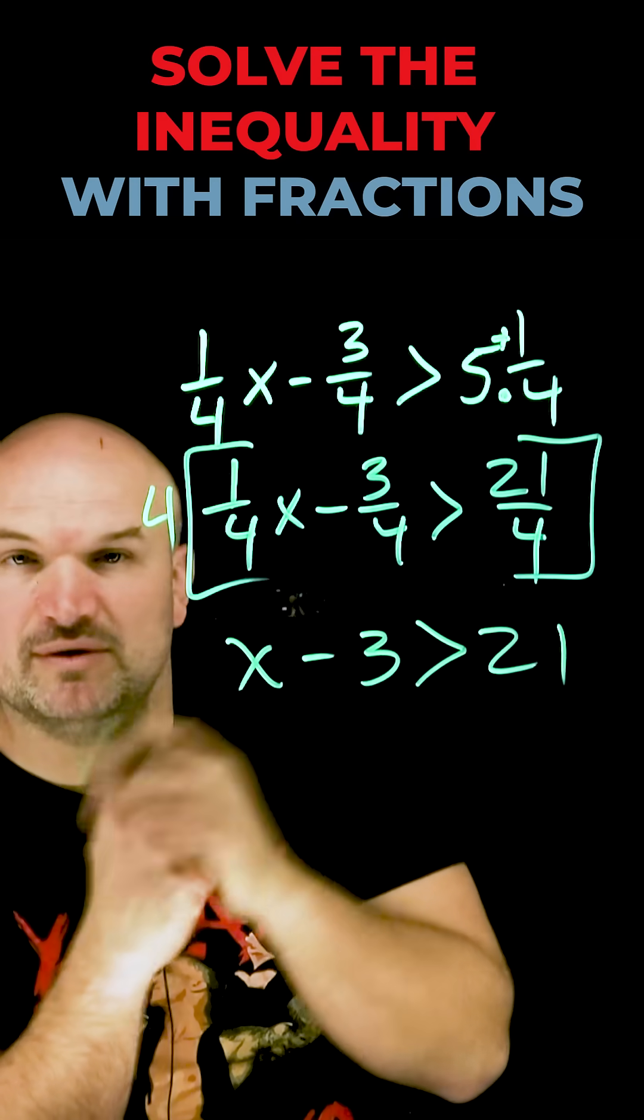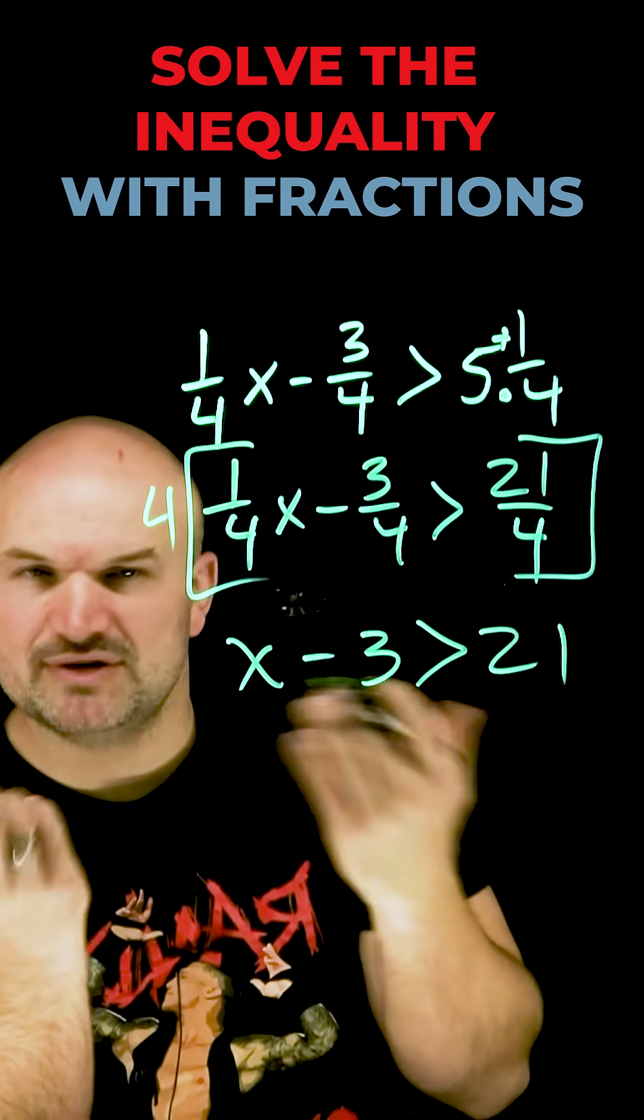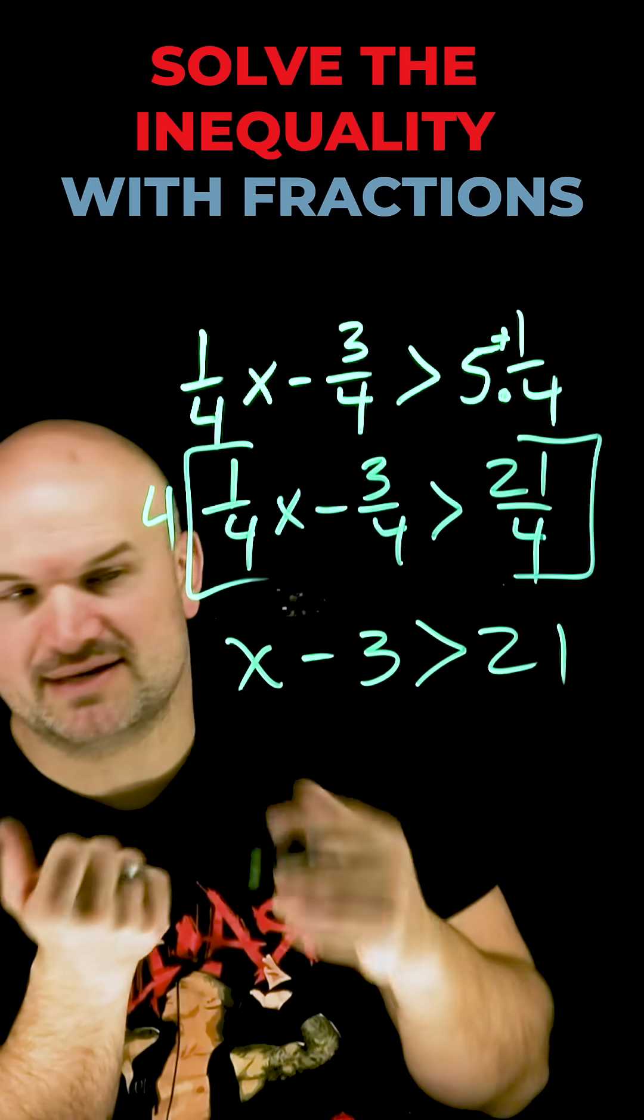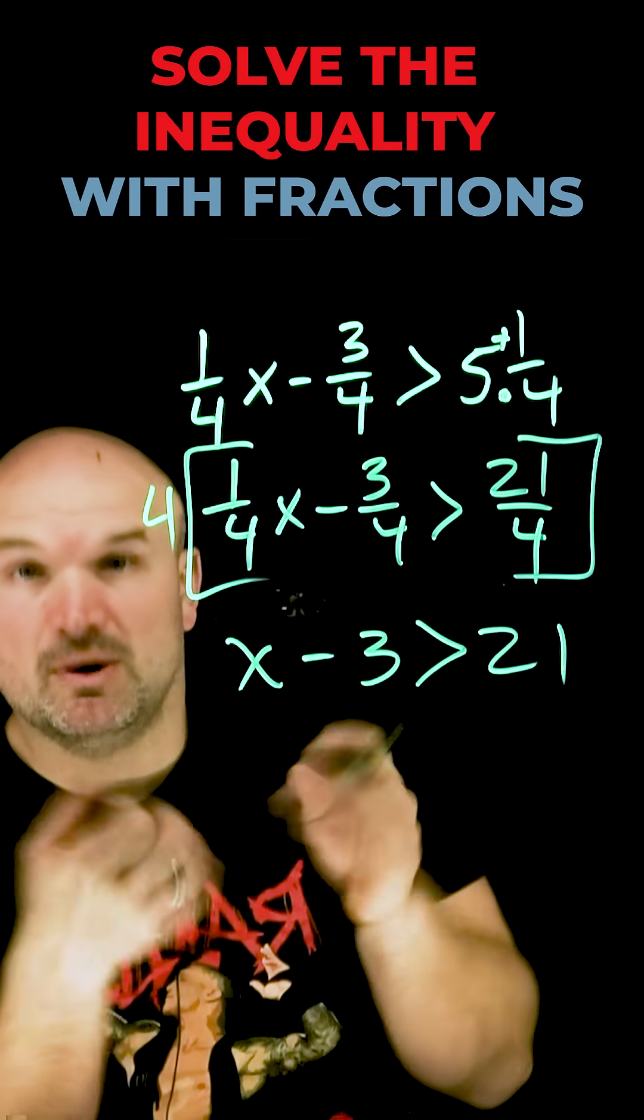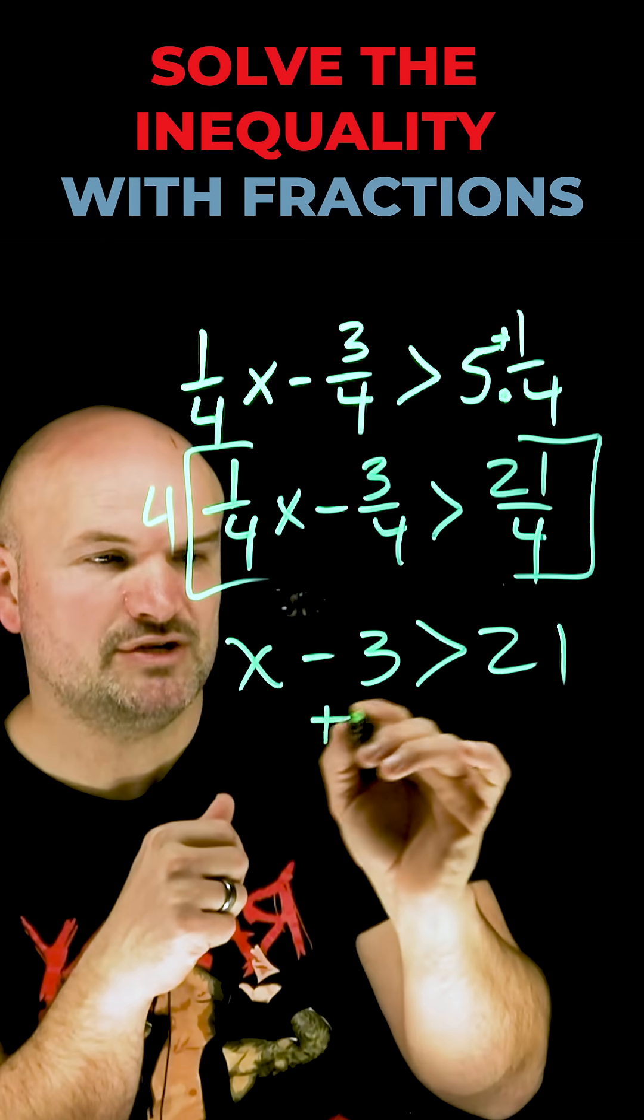Now you can see I have a one-step inequality. All I need to do is isolate x. So I need to ask myself, what is happening to x? x is being subtracted by 3. To undo subtracting 3, I need to add 3.